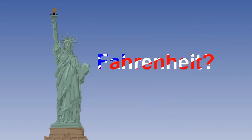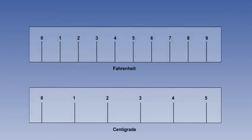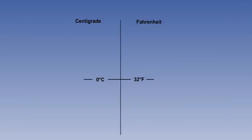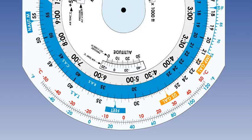The majority of the aviation world uses centigrade or Celsius as a temperature scale, but Fahrenheit is still widely used in the USA. There are 9 degrees of Fahrenheit temperature rise to 5 degrees of the equivalent Celsius rise, and 0 on the Celsius scale is plus 32 on the Fahrenheit scale. There are formulae for conversion, but for simplicity, use the temperature conversion scale on the CRP5.